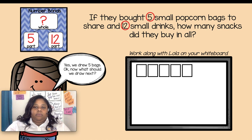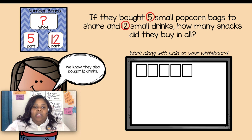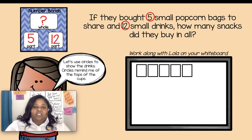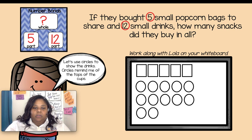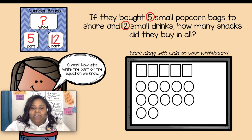Now what should we draw? That's right, we need to draw the other part we know. We know that they also bought 12 drinks. Let's use circles to show the drinks — circles remind me of the tops of the cups. So let's recount the cups to make sure we drew 12: one, two, three, four, five, six, seven, eight, nine, ten, eleven, twelve. Super!